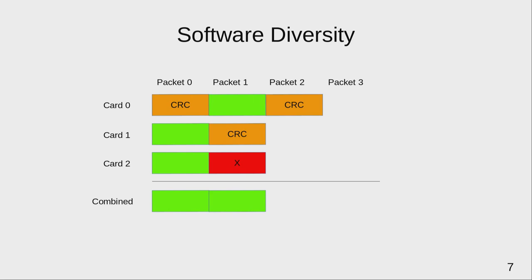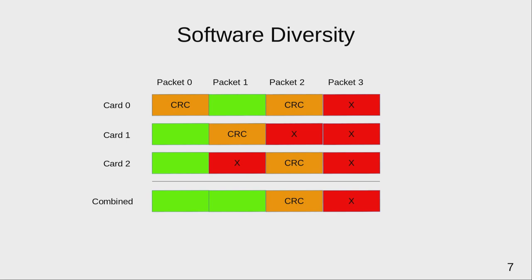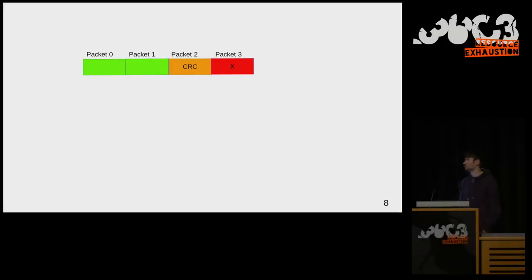Now if packet three has a CRC error, is completely missing, and has another CRC error across all cards, the best we can do is pick one of the packets with a CRC error, preferably the one with the higher received signal strength. And packet four might be missing on all cards — this typically happens when external interference like someone switching on a light destroys reception across all receivers. There's nothing we can do in that case. The combined stream is still better than one card, but there are still some artifacts.